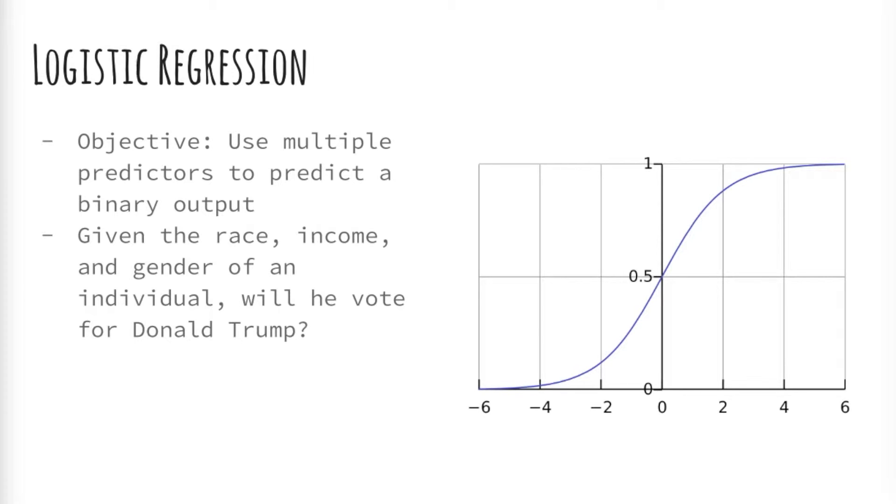In a logistic regression we use predictors to predict a zero or one output. For example, if we use voting for Donald Trump as the binary output variable we can try to predict if a certain individual will vote for Trump based on a combination of variables.